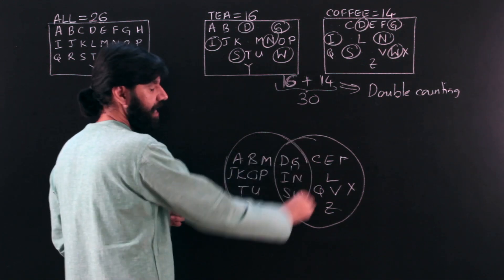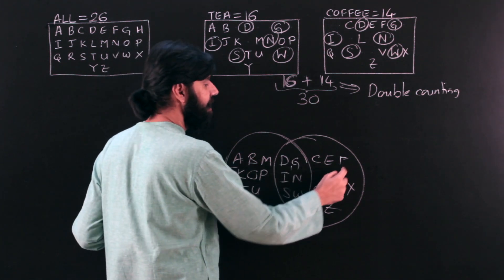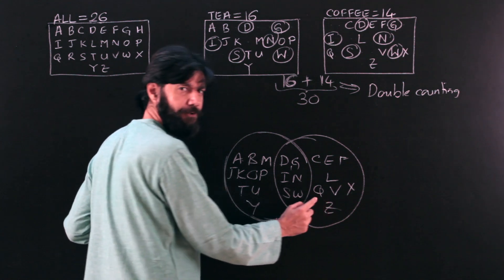So there are 16, 17, 18, 19, 20, 21, 22, 23, 24.